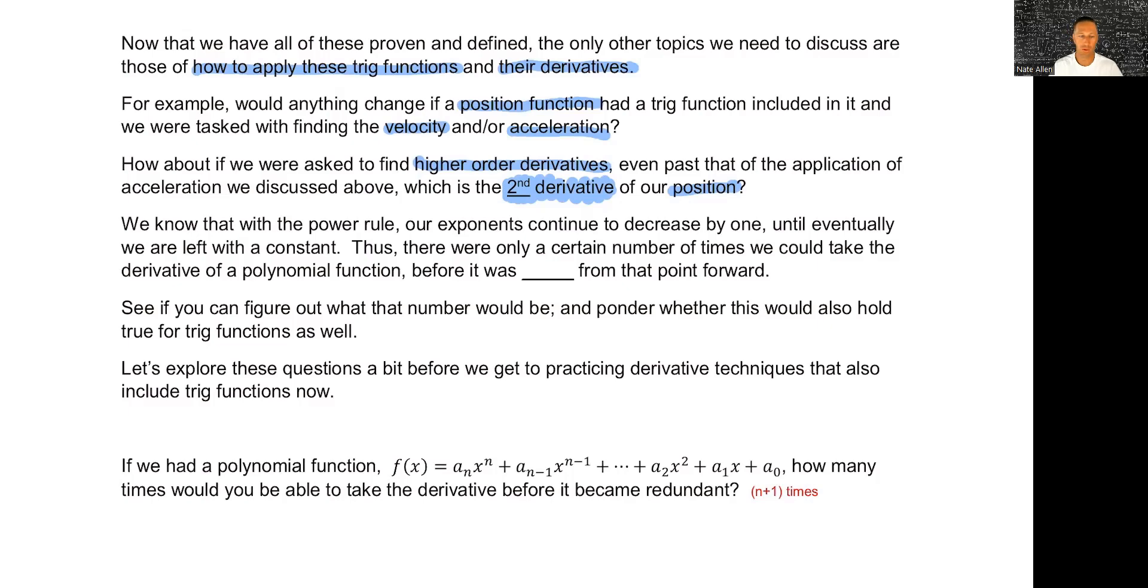We knew that a polynomial function, we had that power rule, and the power rule showed us that whatever power the original function was, when we took the derivative it would be one less, whatever the degree was, the highest power. So eventually if you do it enough times we would end up getting a constant and getting a zero from then on.